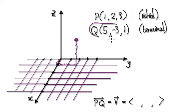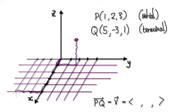And then this terminal point would be 5 in the x direction, negative 3 in the y direction, and then 1 up. So it's going to be somewhere around here.